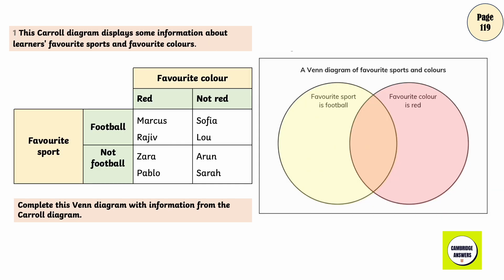This Carroll diagram displays some information about the learner's favorite sports and favorite colors. Complete this Venn diagram with information from the Carroll diagram.